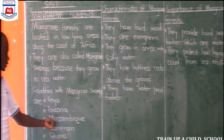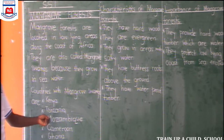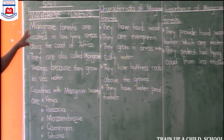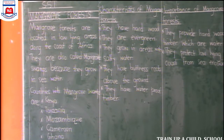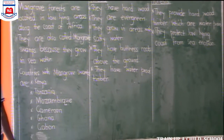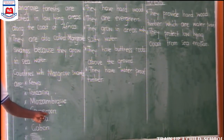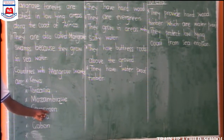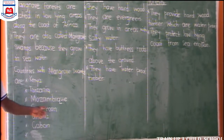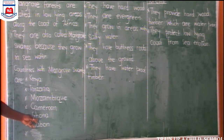Another country is Cameroon. Cameroon touches the West African coast, but it is a country which lies in Central Africa. It touches the coast of West Africa. Another country we have is Ghana.